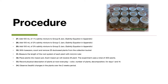With tweezers I counted and removed 25 duckweed plants from the collection bucket. I measured the length of the root system of each plant with a centimeter ruler and placed 25 plants into each mason jar. I then recorded the physical description of the plants at noon every day and observed health changes in the plants over the two-week period.